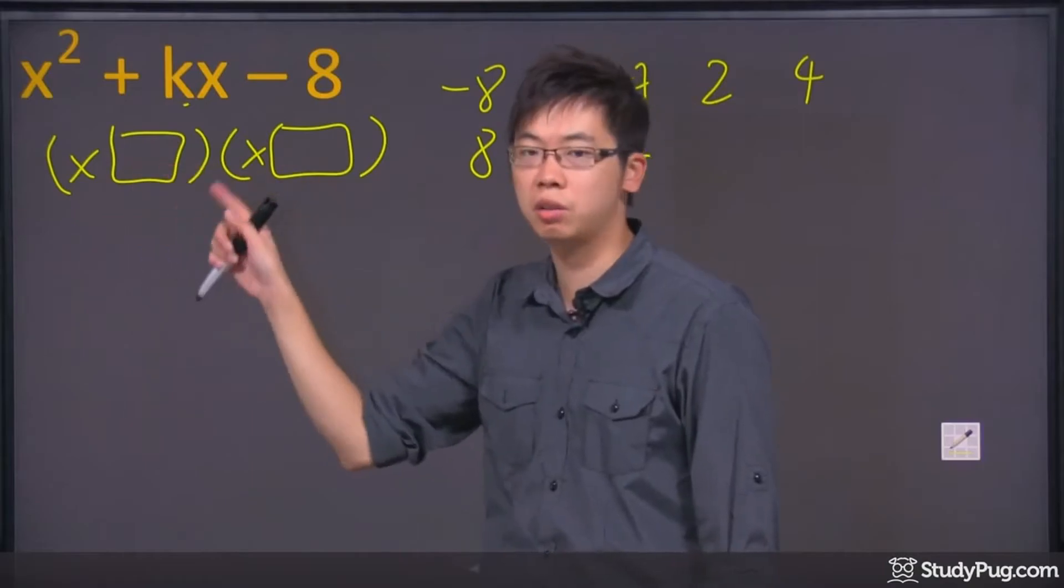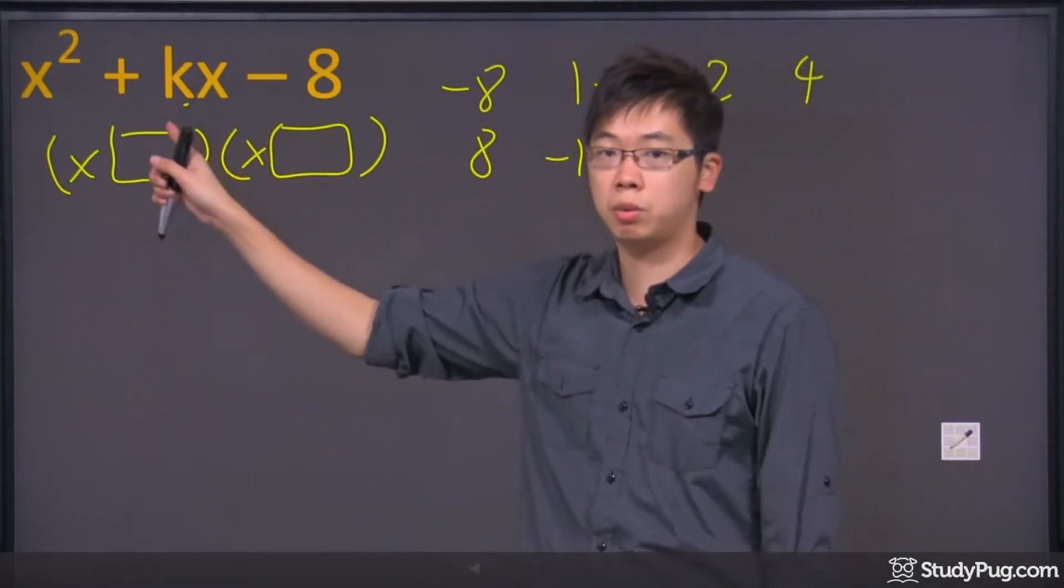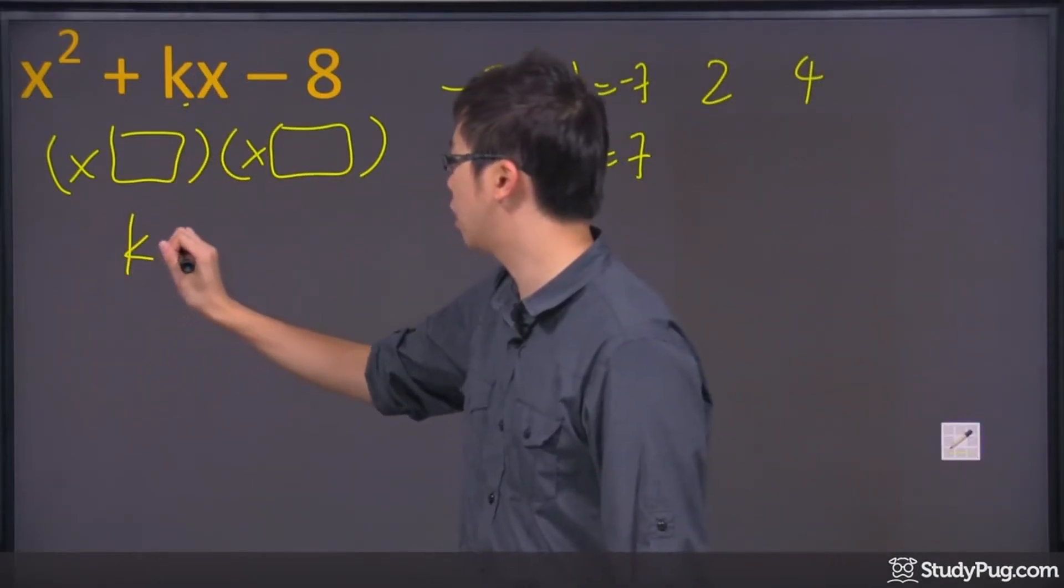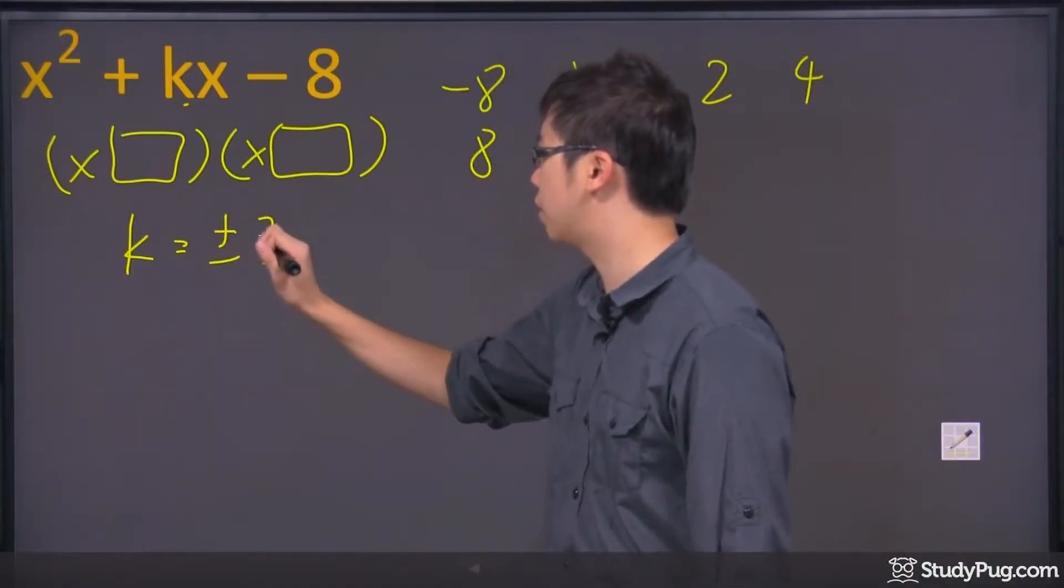We're not here trying to figure this out. We're here trying to figure out the possible k's. So for the first k that we have, we have plus minus 7.